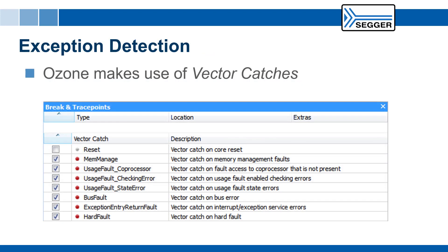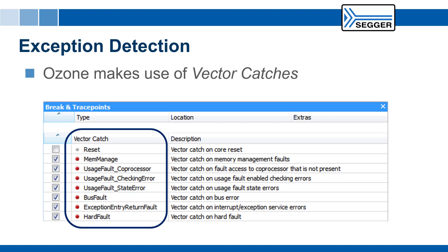In order to detect exceptions, Ozone makes use of the vector catches on ARM devices. In addition to regular breakpoints, ARM devices can break execution on fetch of an exception vector just before the exception handler is executed. This feature enables automatic break on exception without the use of hardware breakpoints. With a vector catch on hard fault, a system crash can be immediately detected and further analyzed in the debugger.